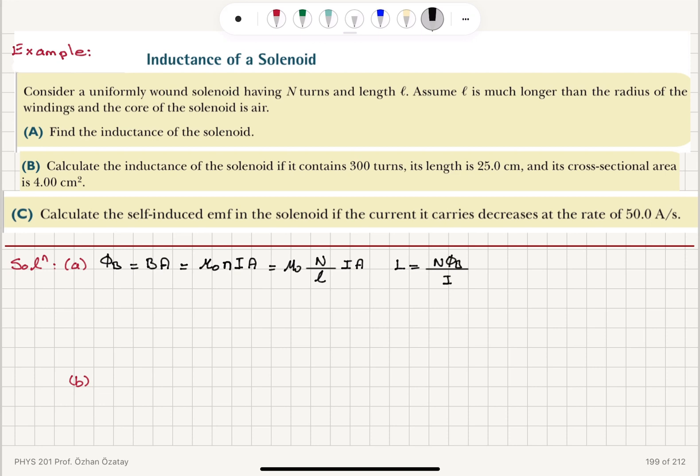So if we have capital N turns in the loop, it is capital N phi B divided by I. So we already had capital N here, it will become N squared.